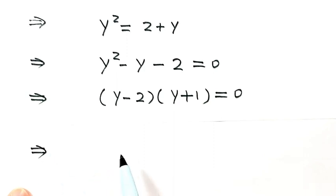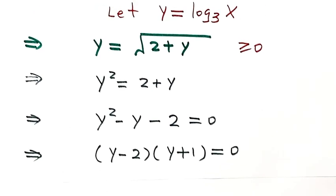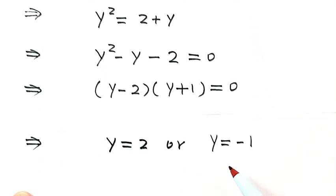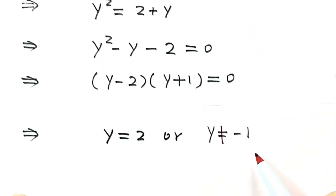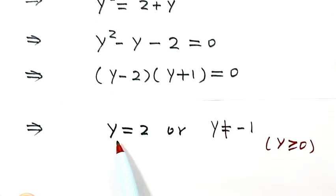Let each factor equal 0. The first factor gives y equals 2. The second factor gives y equals negative 1. Because y is bigger than or equal to 0, y cannot be negative, so we only consider y equals 2.